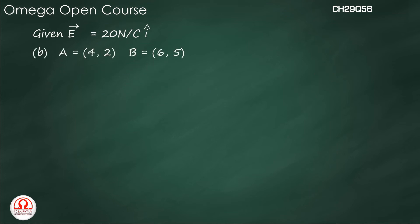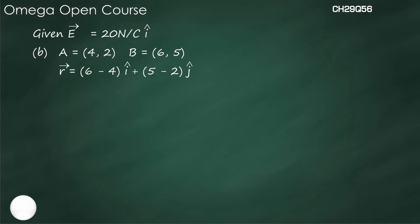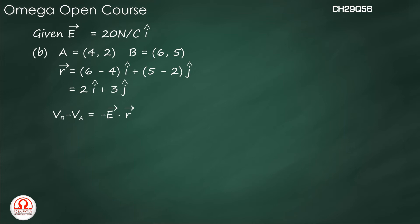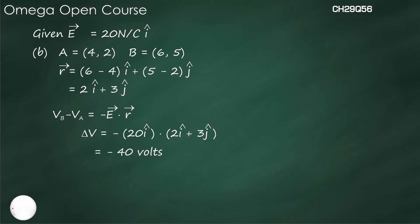Part b: A = (4m, 2m), B = (6m, 5m). Here r is the displacement vector between the two coordinates, so r = (6 minus 4) i-cap + (5 minus 2) j-cap = 2 i-cap + 3 j-cap. Again, VB minus VA = minus E dot r = minus 20 i-cap dot (2 i-cap + 3 j-cap) = minus 40 volts.